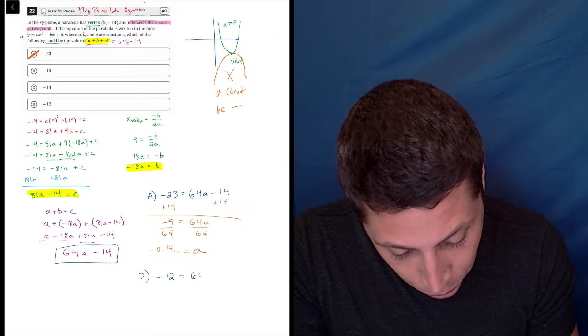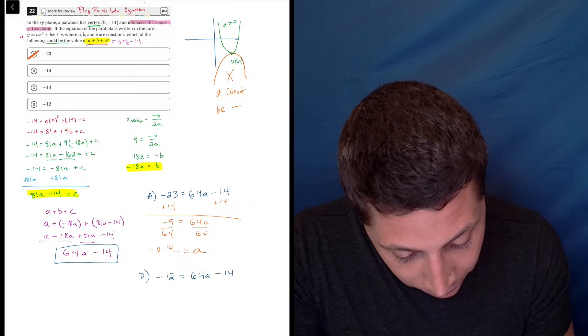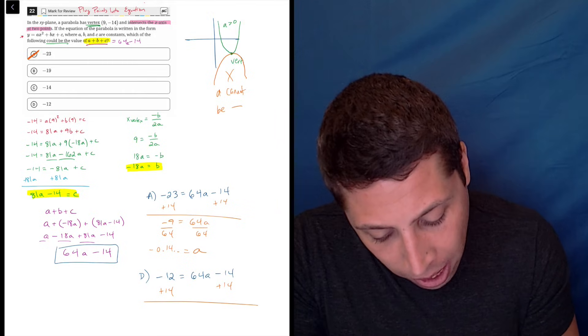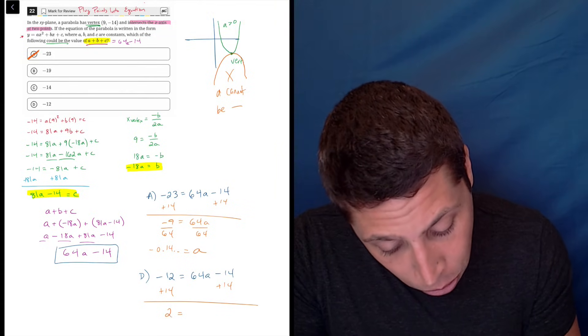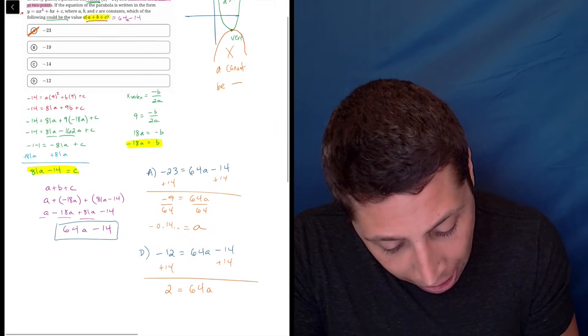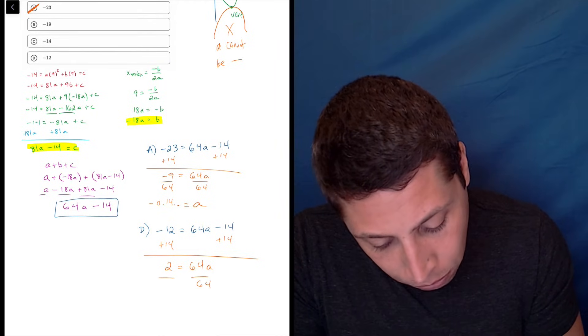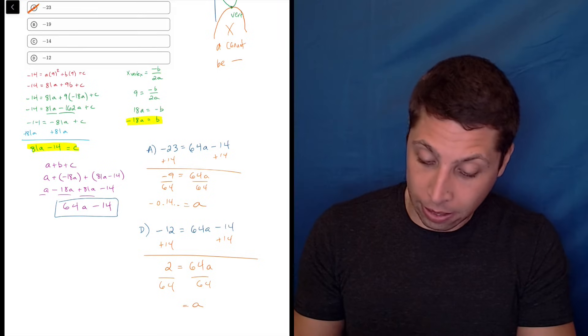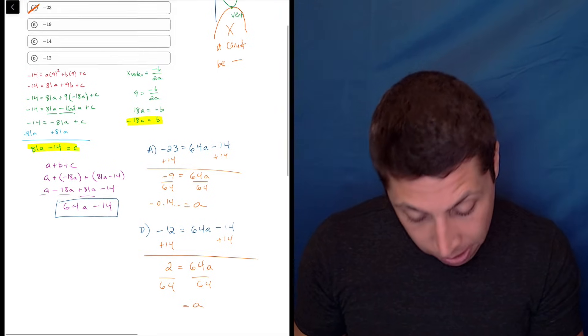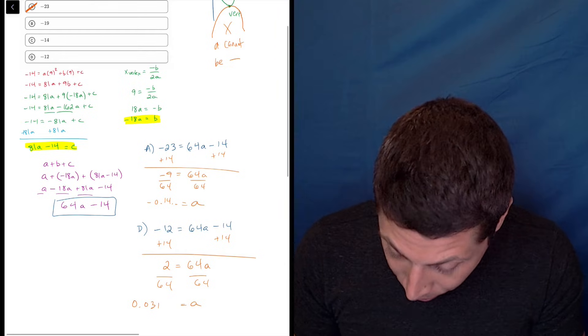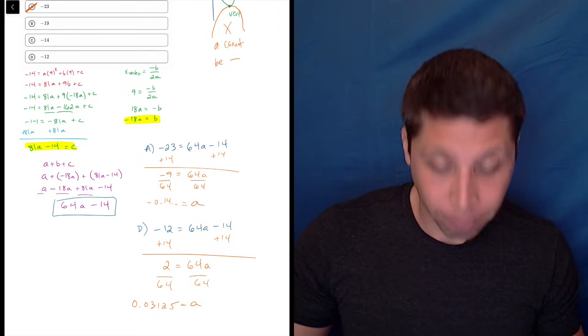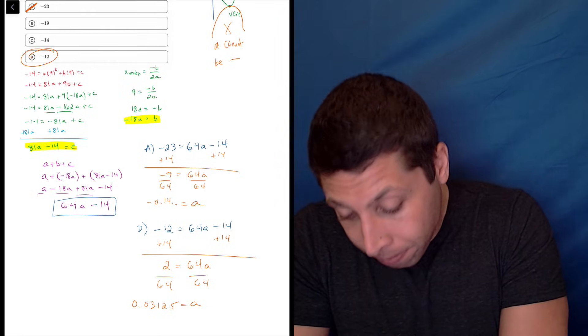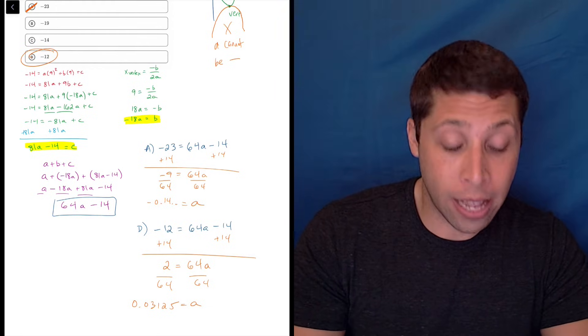So negative 12 is equal to 64A minus 14. Okay. So let's do the same steps. We're going to solve for A. Add 14 to both sides. We're going to get positive 2 is equal to 64A. And now when we divide by 64, it's still a messy number, but it's positive. I'll tell you what it is. 2 divided by 64 is 0.03125. Positive. So there it goes. That's it. That gave me a valid A that I could use.